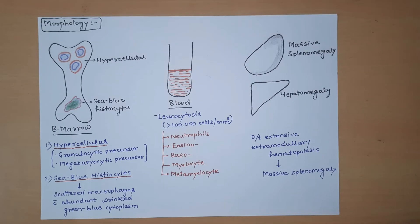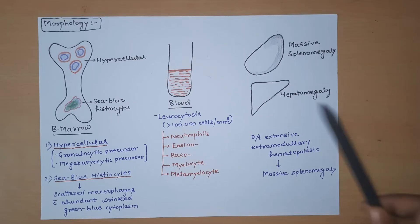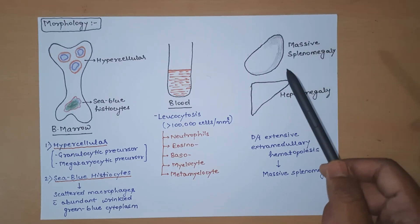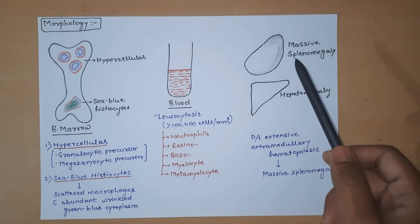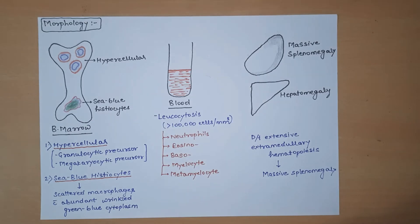This finding of massive splenomegaly is helpful for differentiating CML from other diseases like AML, ALL, or CLL. The patient of CML usually presents with a dragging sensation in the abdomen because of this massive splenomegaly, and this is a characteristic finding seen in these patients.